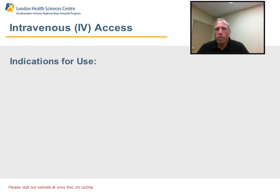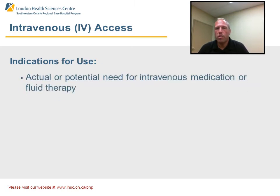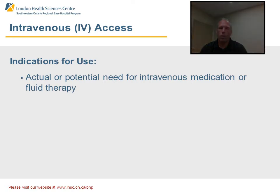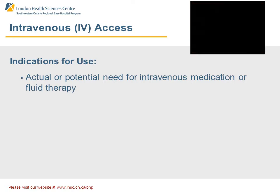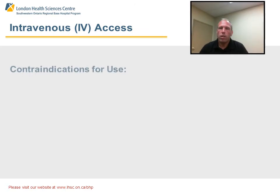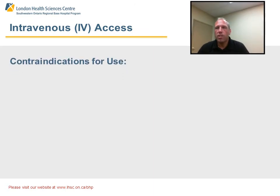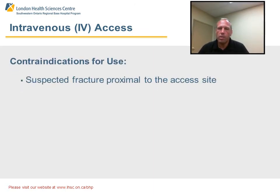What is the indication for use of an IV? It is the actual or potential need for intravenous medication or fluid therapy. The contraindication for use is a suspected fracture proximal to the access site.